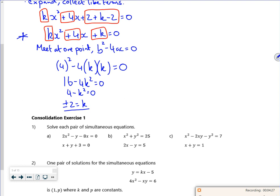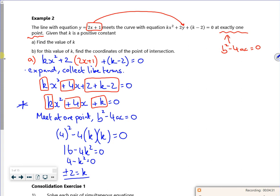So if k is plus or minus 2, now you've got to think about this. It tells us that k is a positive constant. So I want to be a little bit savvy here. Because it says k is greater than zero, therefore k has to be plus 2. So that's my part A done, and I've justified why it is that.